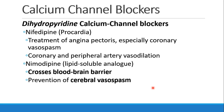We've talked about two drugs that are calcium channel blockers used to treat primarily heart rate. Now we're going to focus on calcium channel blockers that are mostly used to treat blood pressure — these are the dihydropyridines. The first is nifedipine, also called Procardia. It's used to treat angina pectoris and especially coronary vasospasm. It is a coronary and peripheral artery vasodilator, and you would expect it to cause hypotension.